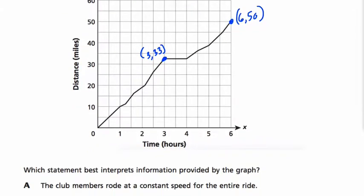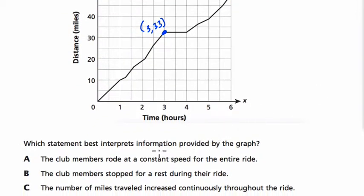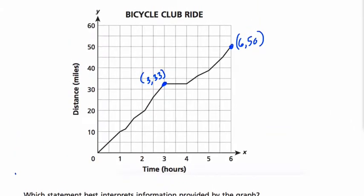They want to know which statement best interprets information provided by the graph. Okay, so the club members rode at a constant speed for the entire ride. Well, that's not true. We wouldn't expect it to be true either. But if it was true, the graph would form some type of straight line like this.